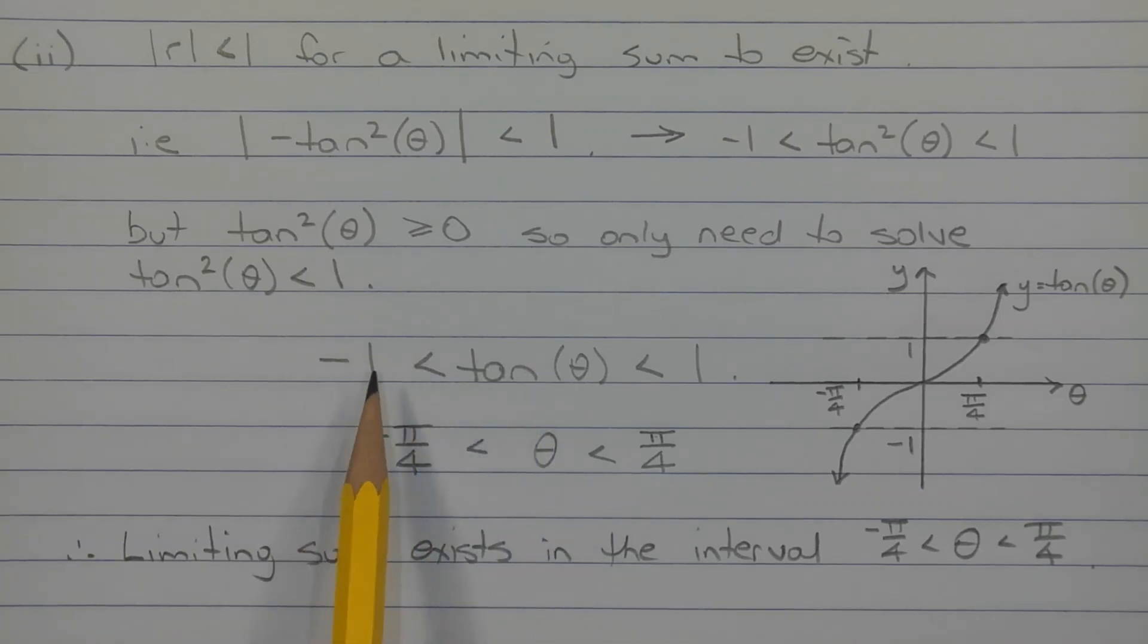So taking inverse tan of all three terms of this three-way inequality, inverse tan of negative 1 is negative pi over 4, inverse tan of 1 is pi over 4, so we get negative pi over 4 less than theta less than pi over 4.